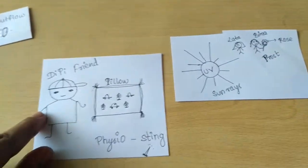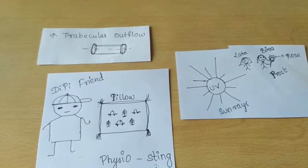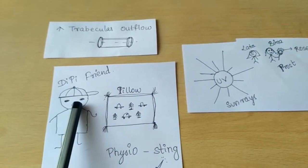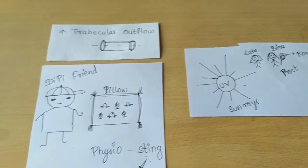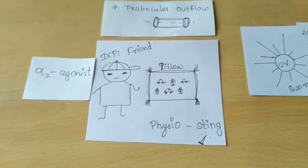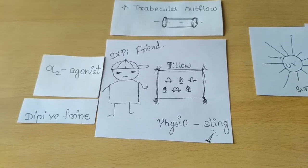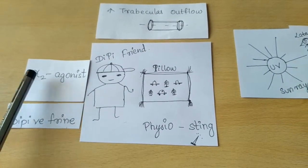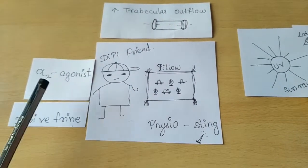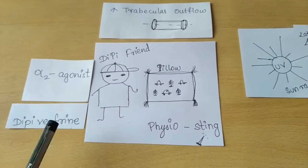One is increasing the trabecular outflow. For increasing the trabecular outflow, you need your friend Dippy. Dippy friend - DP will give you alpha-2 agonist. Dipivefrine. Alpha-2 means you and your friend, agonist means friendship. So the drug under alpha-2 agonist is dipivefrine. Instead of friend, we will write frine - dipivefrine.